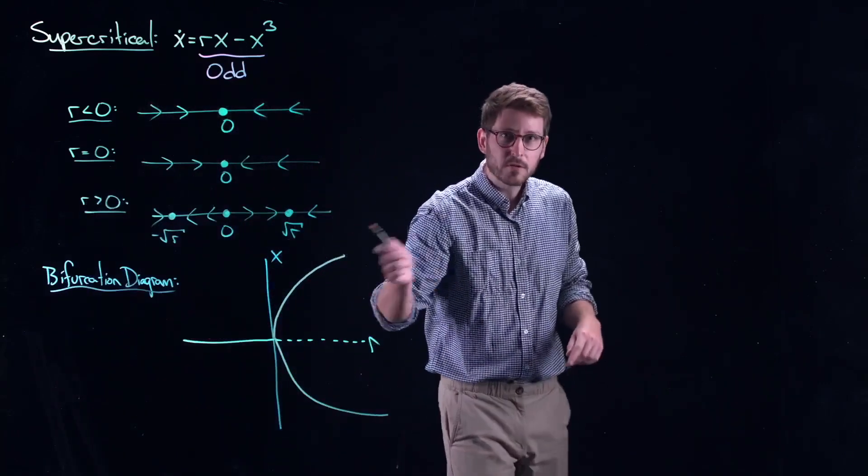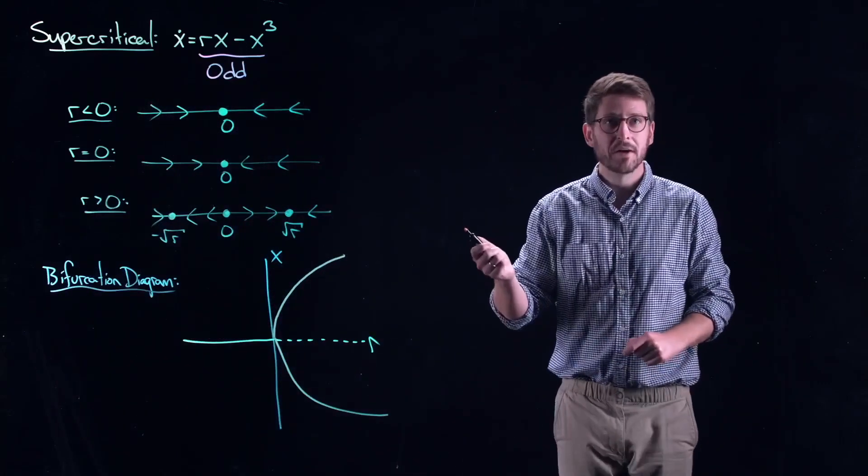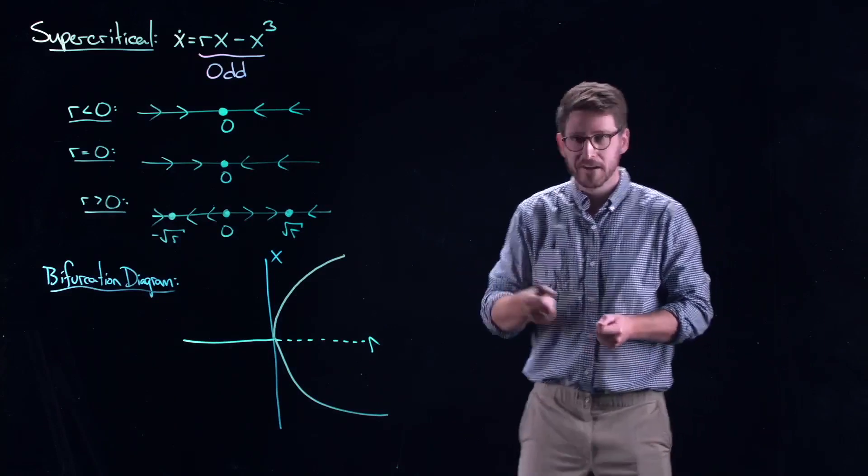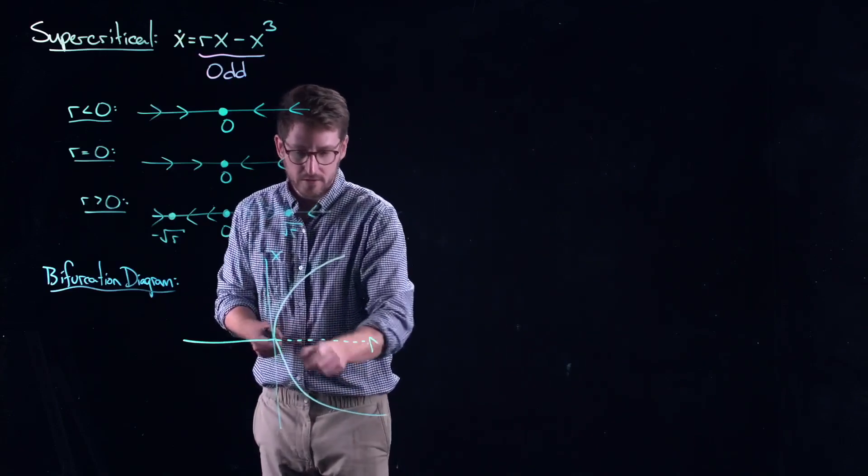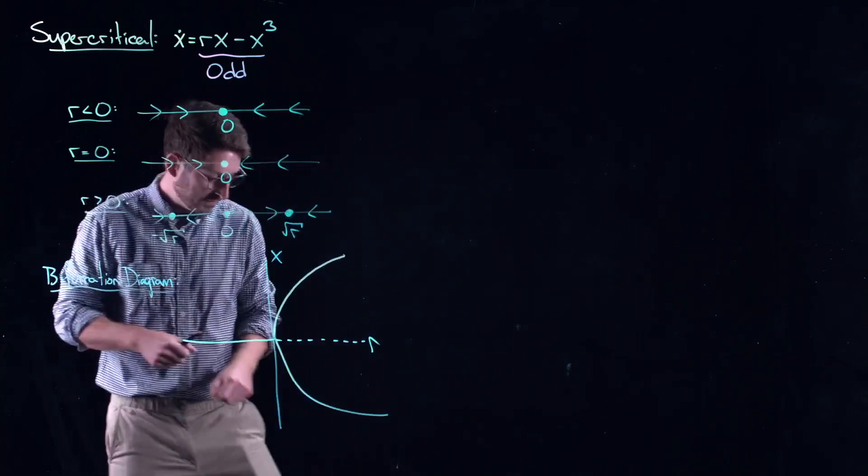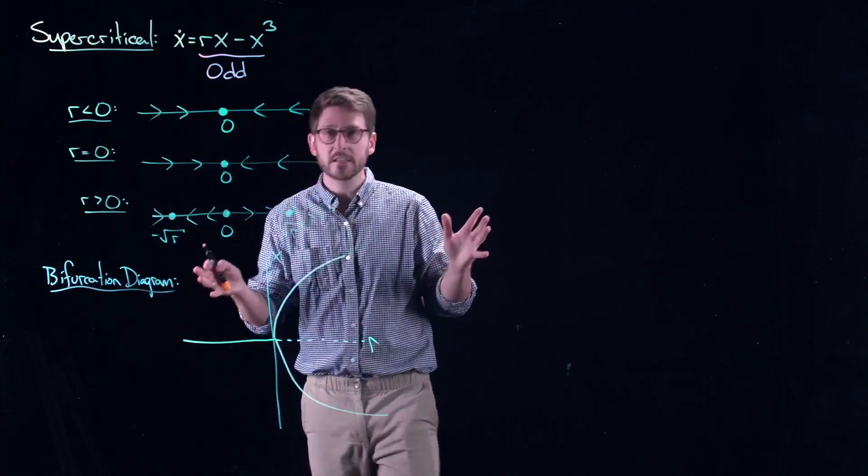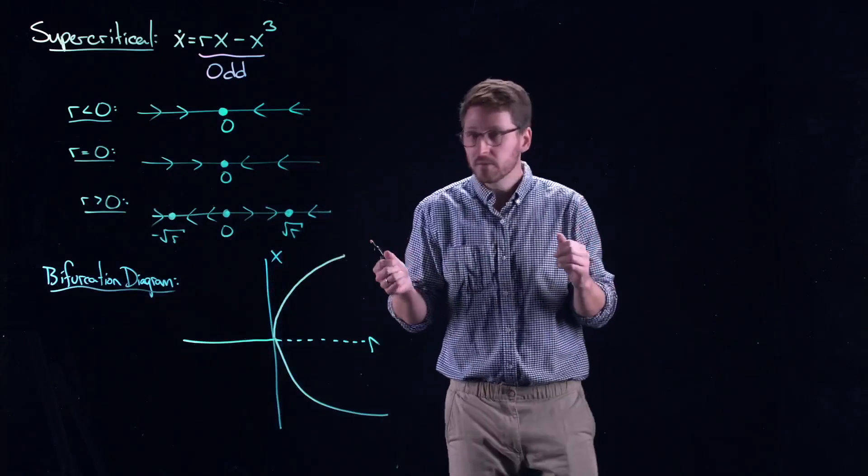And both of those are stable. And hopefully, with that poorly drawn picture, you understand why it's called a pitchfork bifurcation. It kind of looks like a little pitchfork that's emerging here. I've got three little arms and my handle. Nothing too fancy. It's a relatively simple bifurcation.